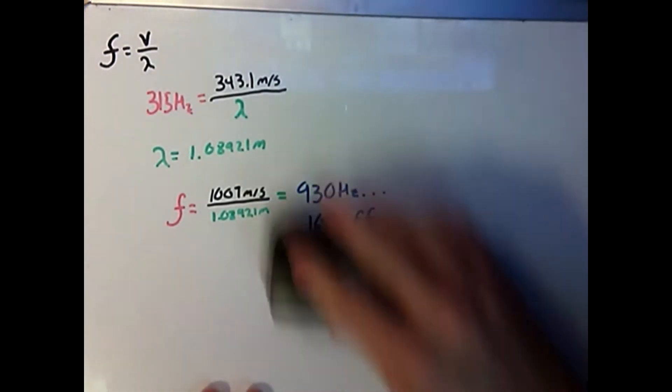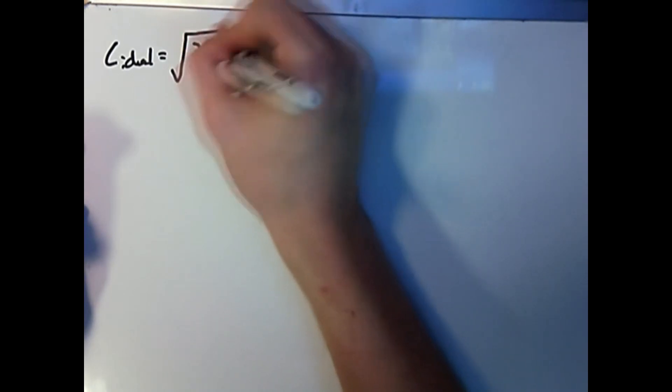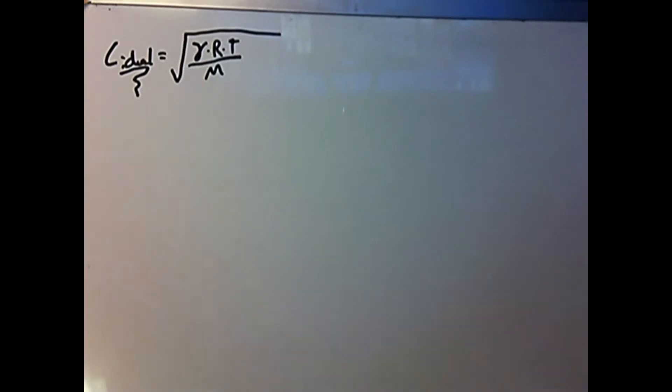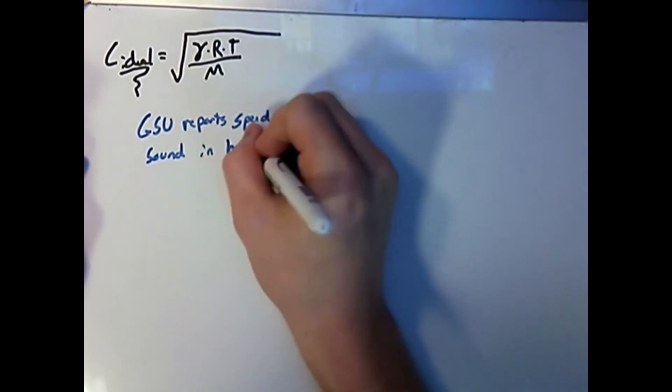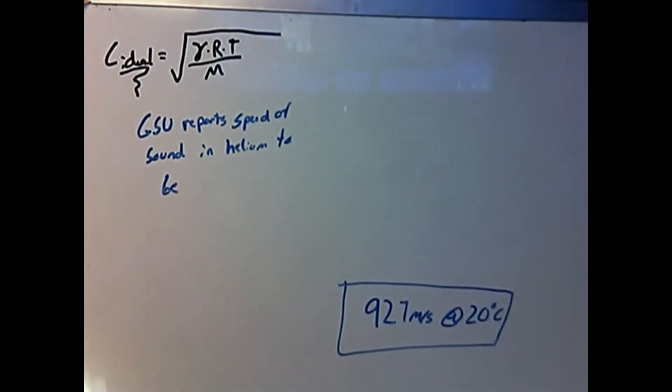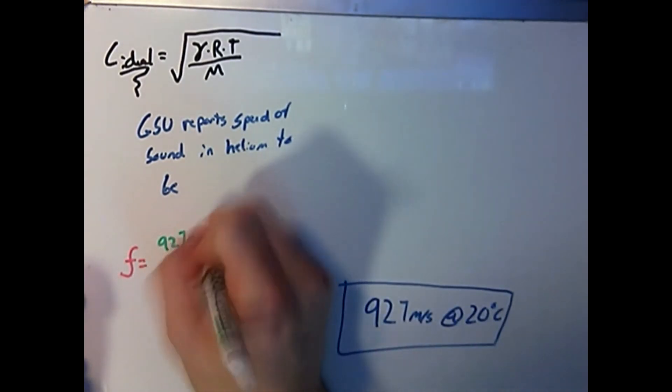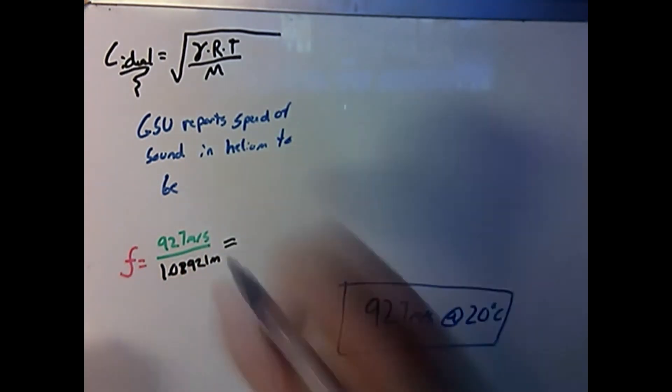If we go back to our equation we used to calculate the speed of sound through helium, we'll notice that C is for an ideal gas. However, helium does not always behave as an ideal gas, especially under real-world conditions. If we search through a few sources, we'll see that Georgia State University has reported the speed of sound through helium to be around 927 meters per second. Let's go back to our frequency calculation using this value. Plugging in the values we found, we'll now see that the frequency should be around 851 hertz. This still leaves us with about an 8.3% error.